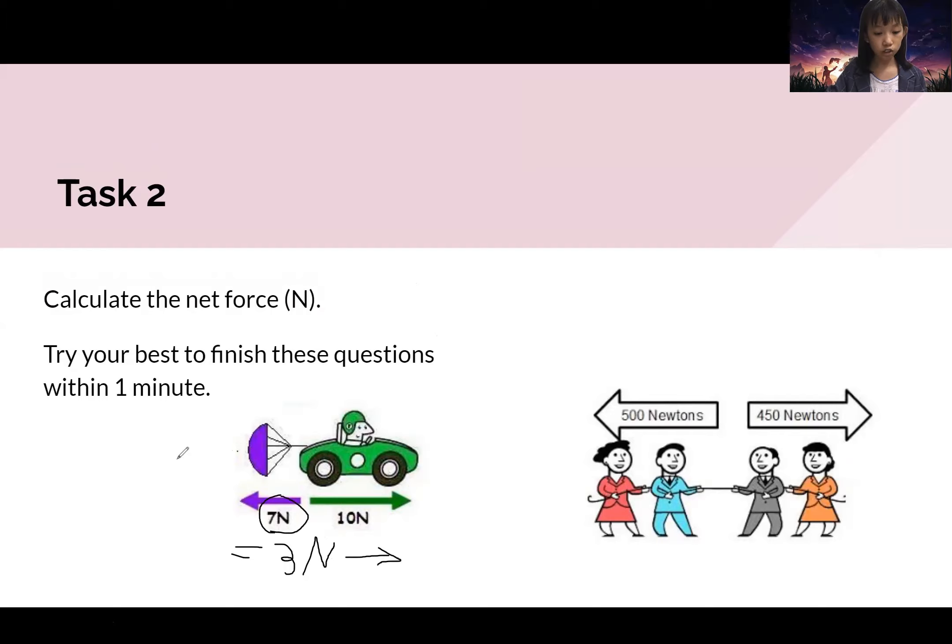So the parachute is going seven newtons back, which means to the left, while the driving force is ten newtons to the right. So ten newtons is longer, which means it's much larger than seven newtons. So seven minus ten, you will get negative three newtons.